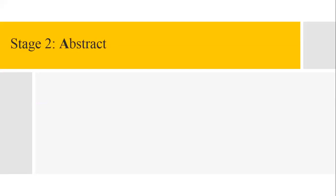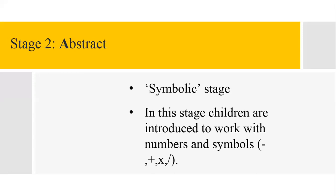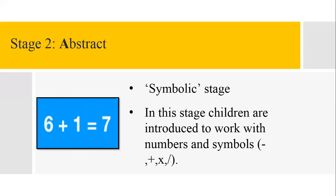Once children have a good understanding of the concept through the use of concrete objects and pictorial images, we move to the third stage, which is the abstract stage. This is also called a symbolic stage where children are introduced to work with numbers and symbols and their relations to each other. In our example, children in this stage use numerals like six and one and count forward to get the total, seven.